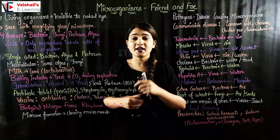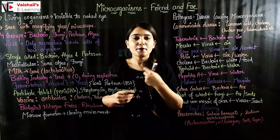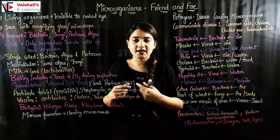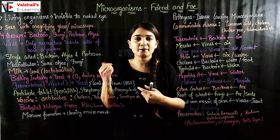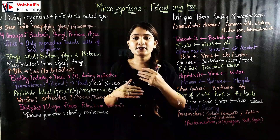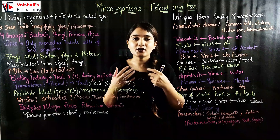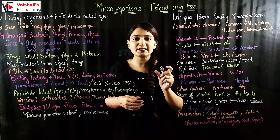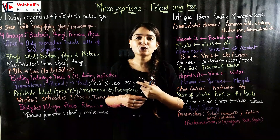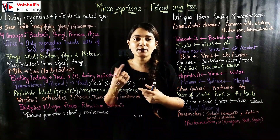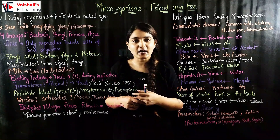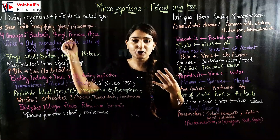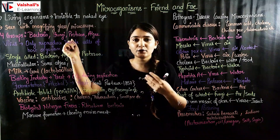What are microorganisms? We are humans — we are organisms, living beings. Animals and plants are also living beings. Now there are some organisms which we cannot see with our naked eyes — these are called microorganisms. 'Micro' means very small, so organisms that are not visible to us with our naked eyes are microorganisms.